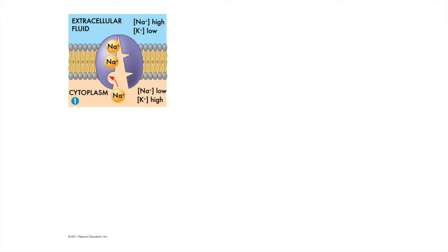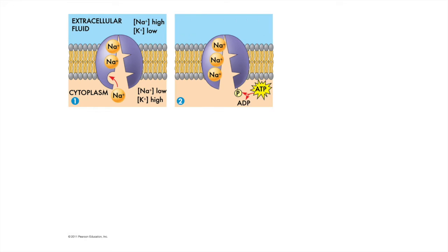Note that the sodium concentration in the cytoplasm starts out lower than the sodium concentration outside the cell, and the potassium concentration is low outside the cell and high inside. With the hydrolysis of ATP, that third phosphate group is attached to the protein, which causes it to change shape.